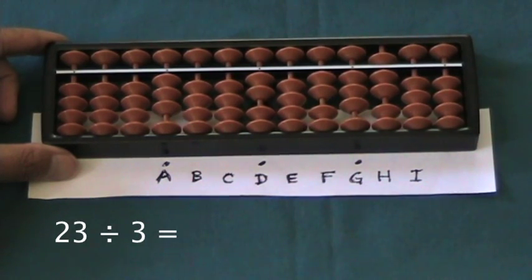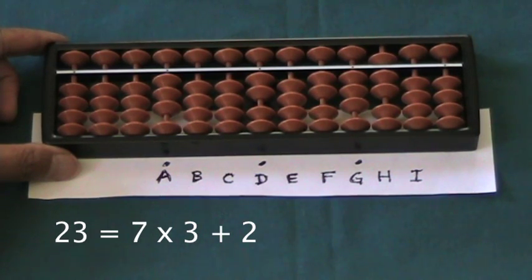Again, we use mental arithmetic. We have to be able to do this. Notice that 23 divided by 3 is a 7 with a remainder of 2, because 3 times 7 is 21.